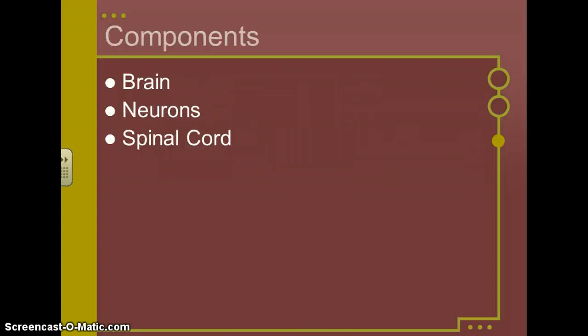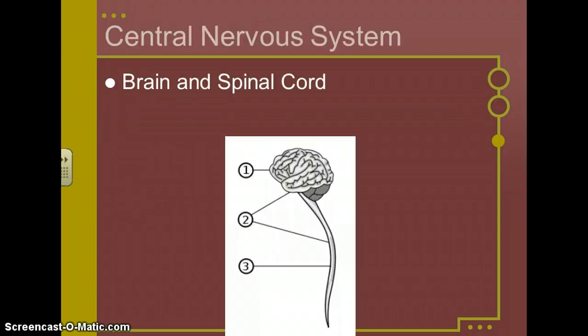Our three main components of the central nervous system are the brain, neurons, and the spinal cord. And so here's just a diagram of that. Number one is the brain. Number two is partially pointing to the brain. And then the bottom arrow of two and three are pointing to the spinal cord. You don't have to draw that. It's just to give you an idea.